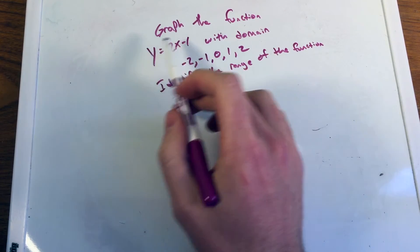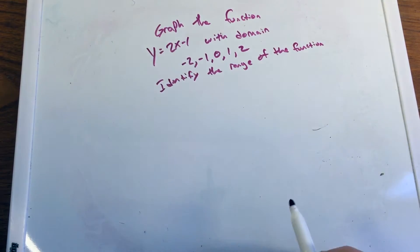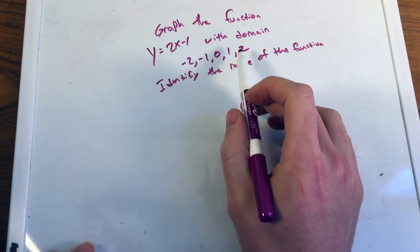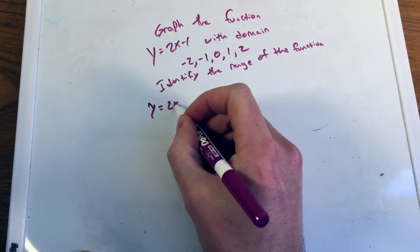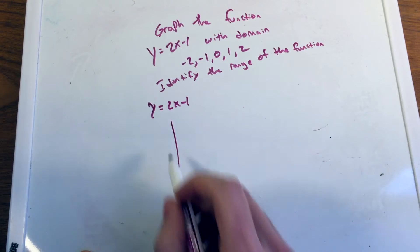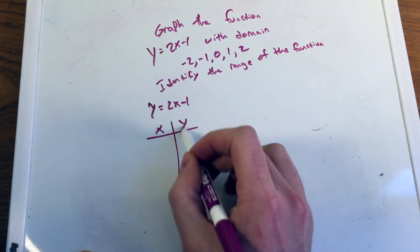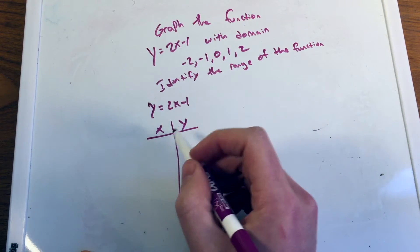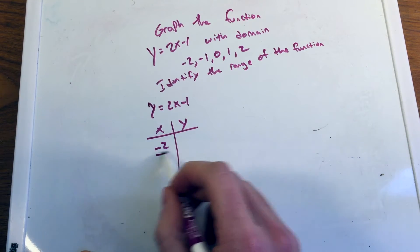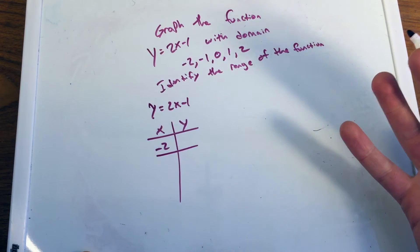So first we're given this equation here, y equals 2x minus 1. And with this domain, these are the x values, the inputs. So we have y equals 2x minus 1. And I want to make a table of x and y values, x values being the values that are here. I'm going to plug them in for x to see what y value will come out of it.